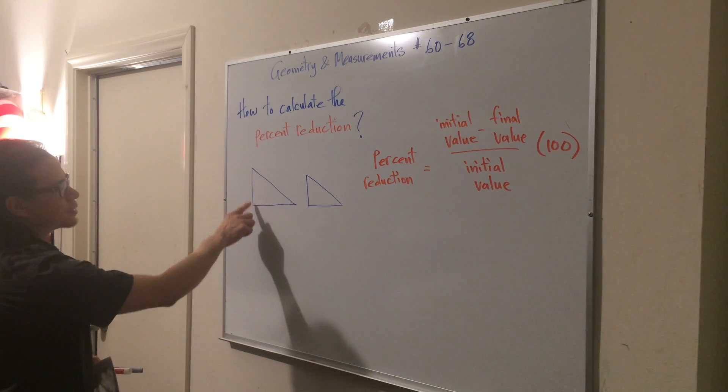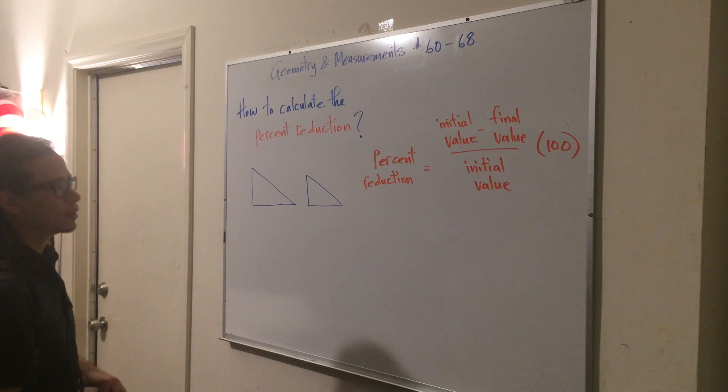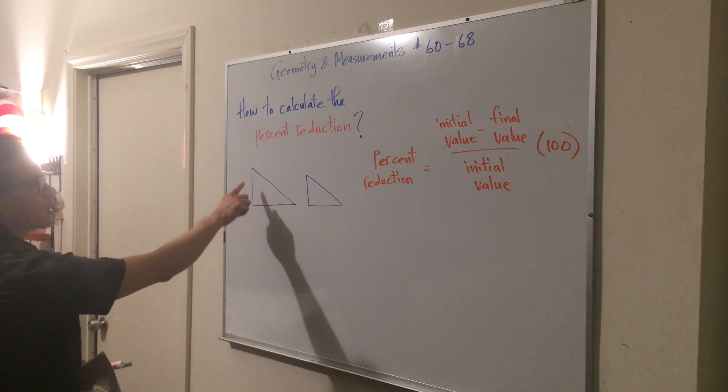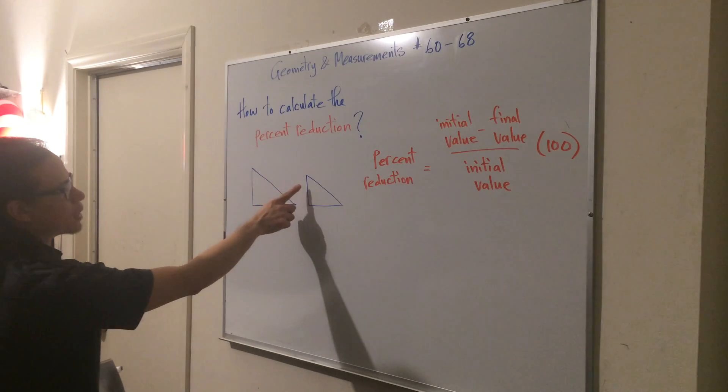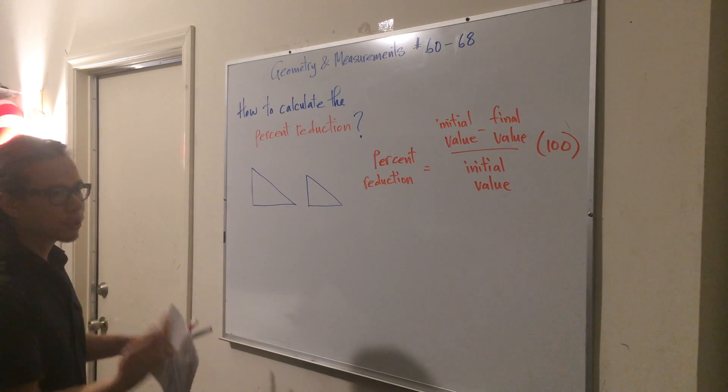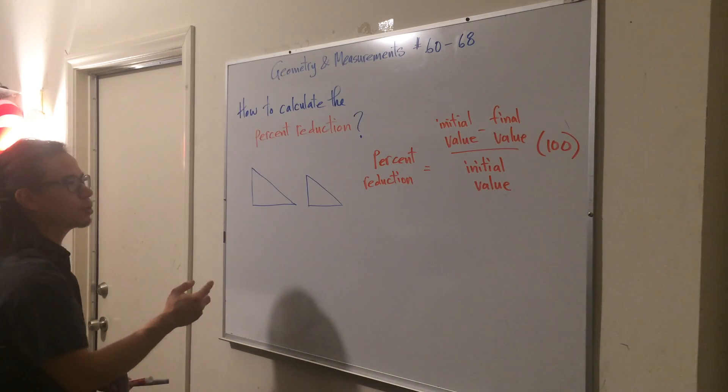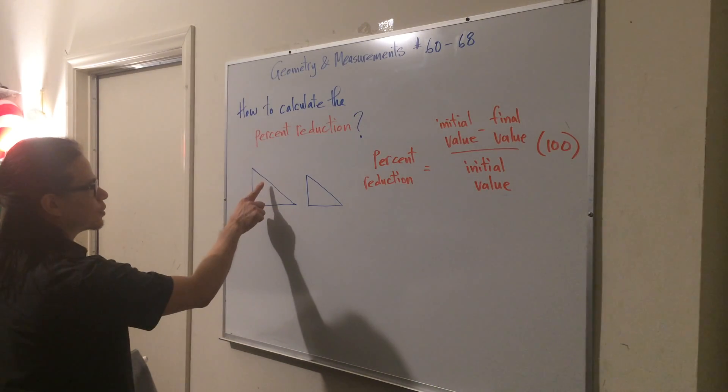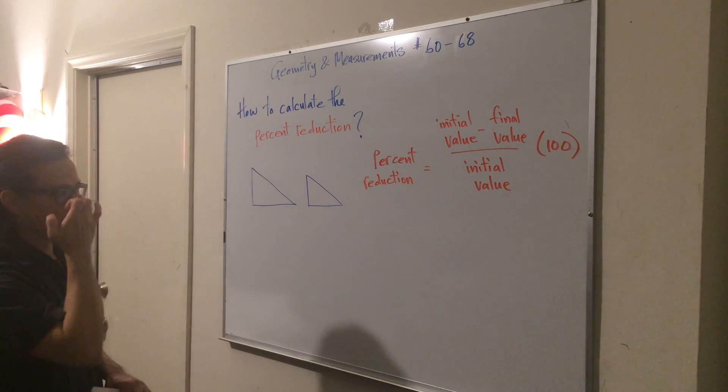So first we need to assume that these two triangles are similar for this to work. Meaning that the left side corresponds to the left side, the bottom corresponds to the bottom. By corresponding, I mean they are proportional. So the right side is proportional to the right side there.